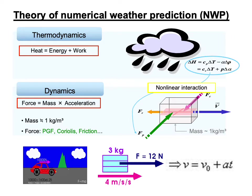Given the mass, we can estimate the forces from analyzed grid data, then obtain the acceleration. Given the acceleration and initial conditions, we can estimate the future state at time equal to t. These two theories are simple, but they are non-linearly interactive. For instance, temperature changes modulate the forces, which in turn affect wind speed, which consequently affects the temperature. Thus, the solutions of the equations are only possible through numerical methods, not exact solutions.